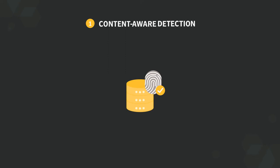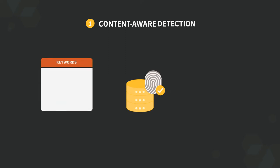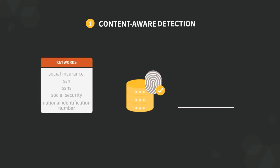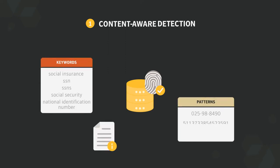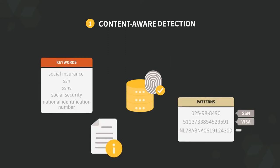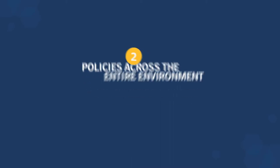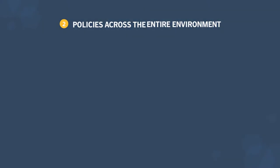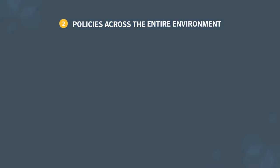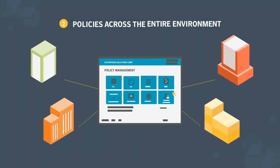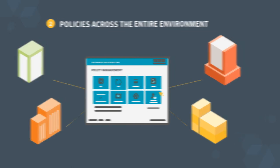data sources and matching between keywords, expressions, patterns, and file properties. Advanced systems use machine learning to protect intellectual property. Second, you need to define and enforce policies across the environment from a single management console with powerful analysis and